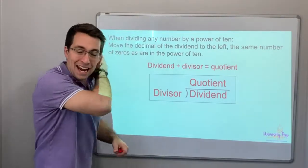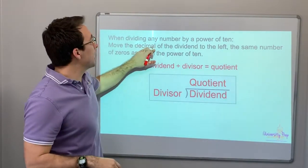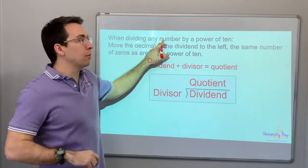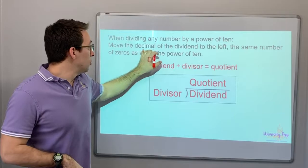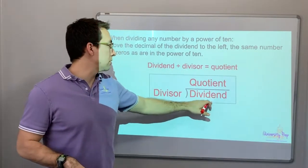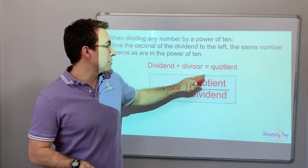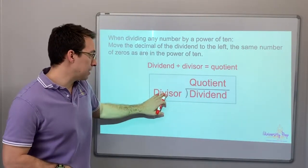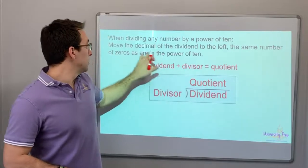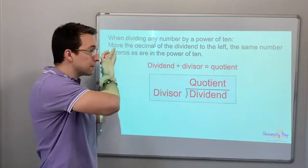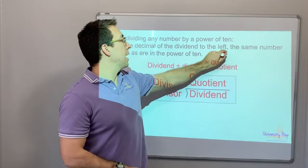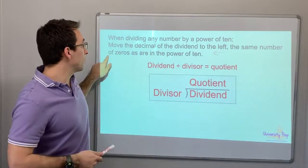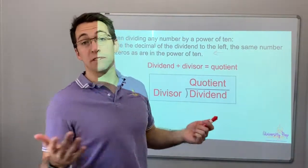When dividing any number by a power of 10, move the decimal. This is not just decimals, this is any number. When you divide it by a power of 10, move the decimal in the dividend. So right here, under the house, dividend divided by divisor equals quotient. You move the decimal of the dividend to the left, the same number of places as the number of zeros in the power of 10.